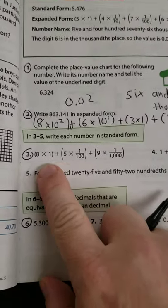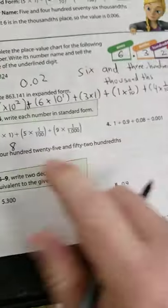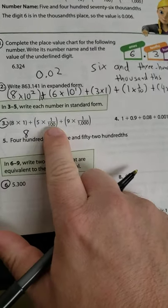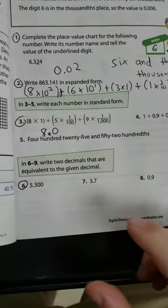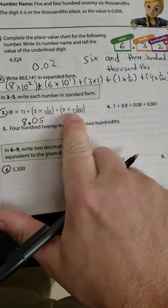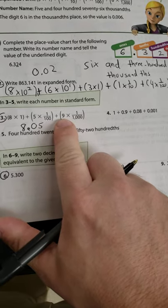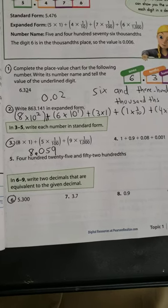All right, now this one, I just want you to go back to expanded form. So eight times one is just eight. Then you have five times a hundredth, so that would be five in the hundredths. Didn't say anything about anything in the tenths, so I'll have to put a zero there. It says five times a hundredth, so that's five in the hundredths. Nine times a thousandth, that means nine would be in the thousandths. So that answer is just eight point zero five nine, or eight and fifty-nine thousandths.